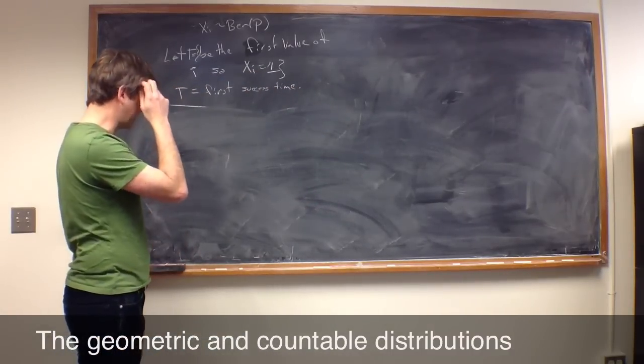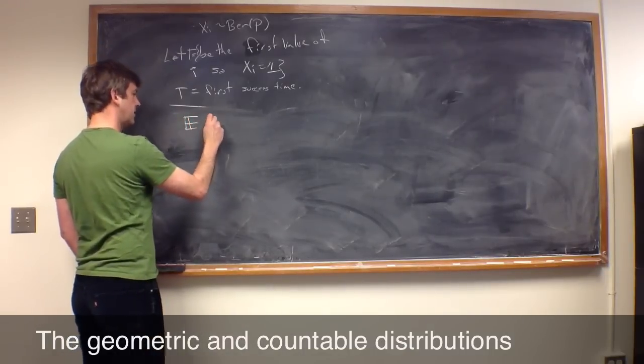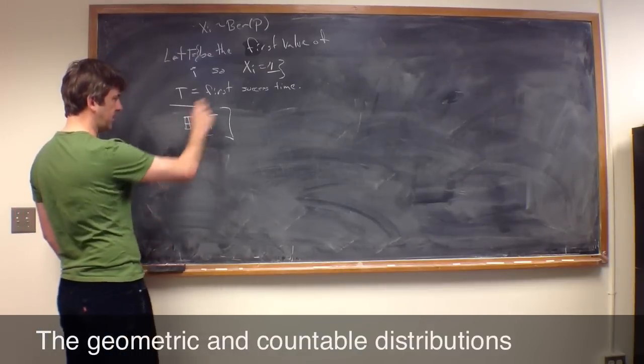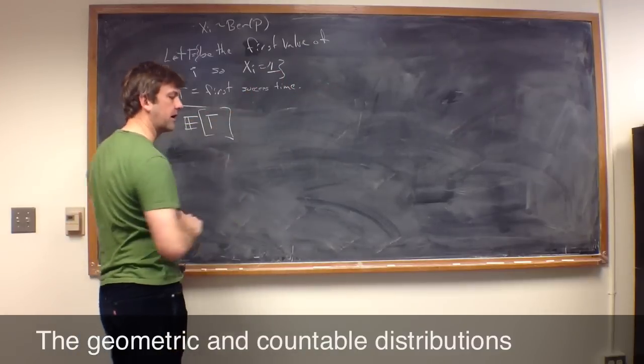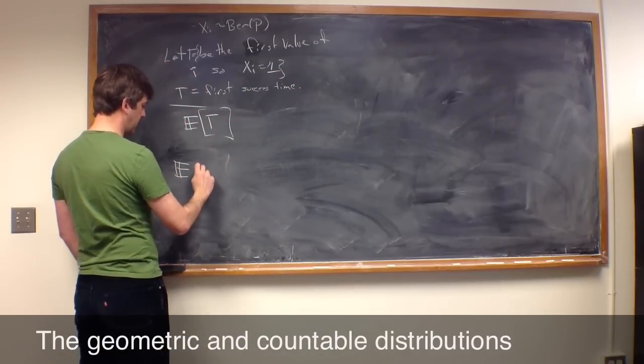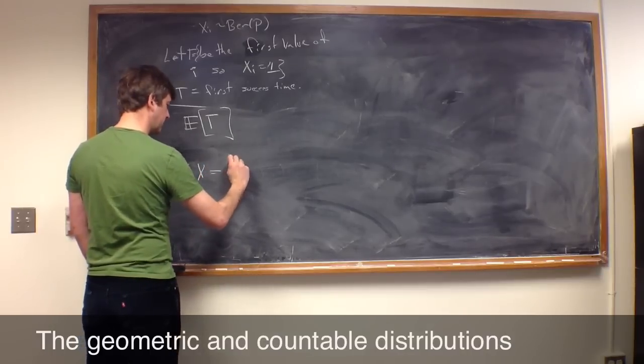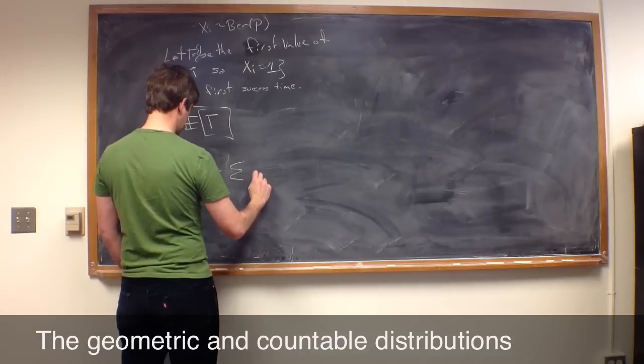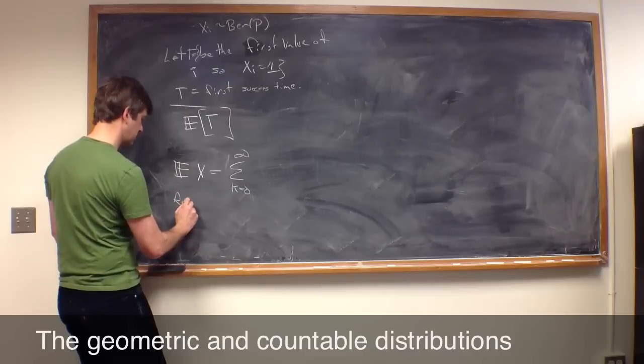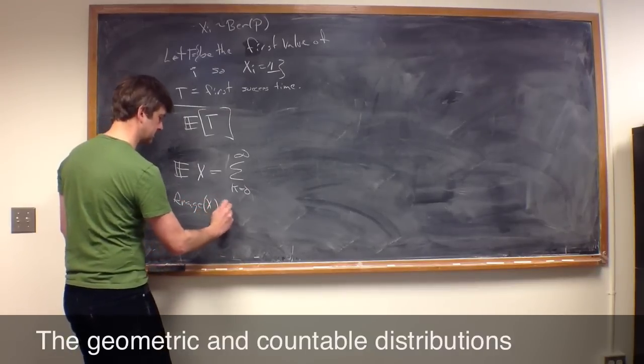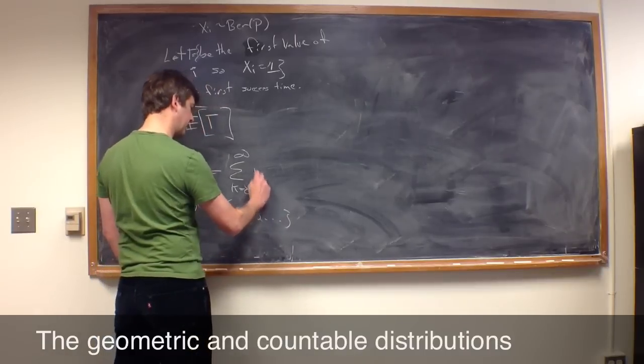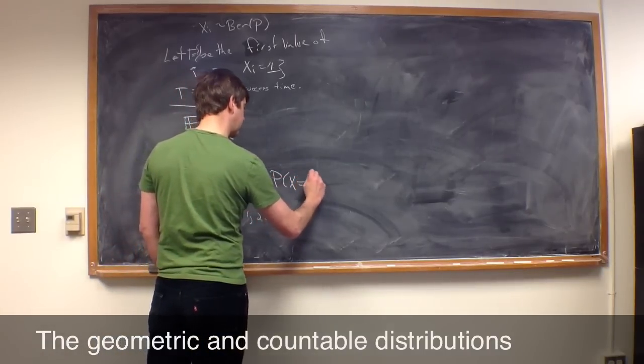Now let me just make one or two quick comments about the geometric distribution. So in the same way, if we want to talk about the expected value of T, well, now we have this countable variable. So, in general, if we have a variable with a countable range, we'll define the expected value of X to be the sum, K equals 0 to infinity, let's say the range of X is some countable set, 0, 1, 2, all the way out. Well, then it will be K times the probability that X equals K.